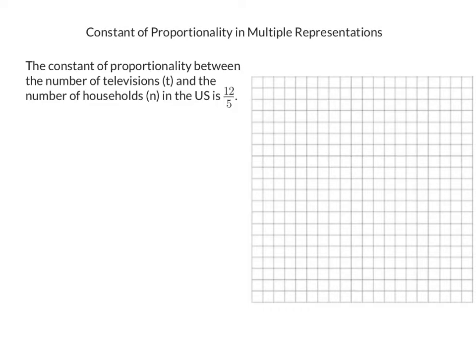If the constant of proportionality between the number of televisions, t, and the number of households, n, in the United States is 12 to 5, we first want to write an equation to represent the situation. We know that k equals y over x, but we have t and n instead. The dependent value is y and the independent is x — televisions depend on households, so we use t over n.